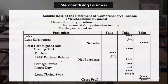Purchase return is directly related to purchases. Then carriage inward and import duty are purchase-related expenses added to net purchases. We then minus the closing stock to get the cost of goods. We subtract the cost of goods sold from net sales to arrive at gross profit.